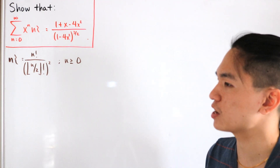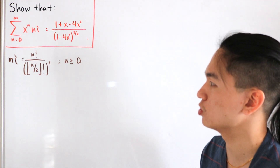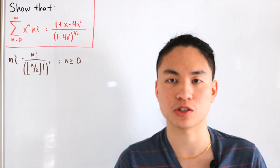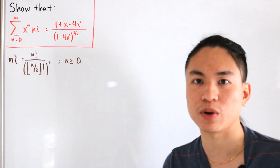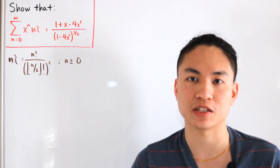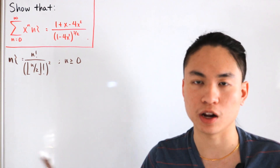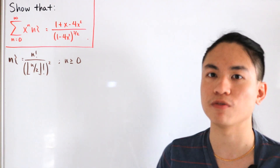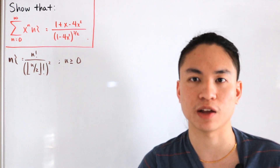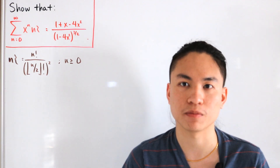We'll also be splitting the sum into even and odd terms — similar to what was done in the previous series computation — and analyzing each separately. Then we add everything together to eventually arrive at the right-hand side. So let's jump right in.